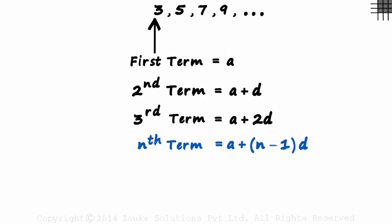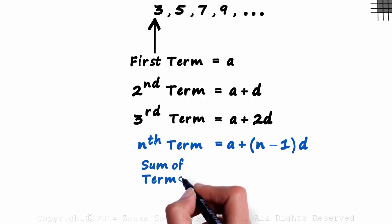Now that we have seen individual terms in a sequence, we can get to the sum of their terms. How do we find the sum of all the terms in a sequence? Think of it in terms of average.